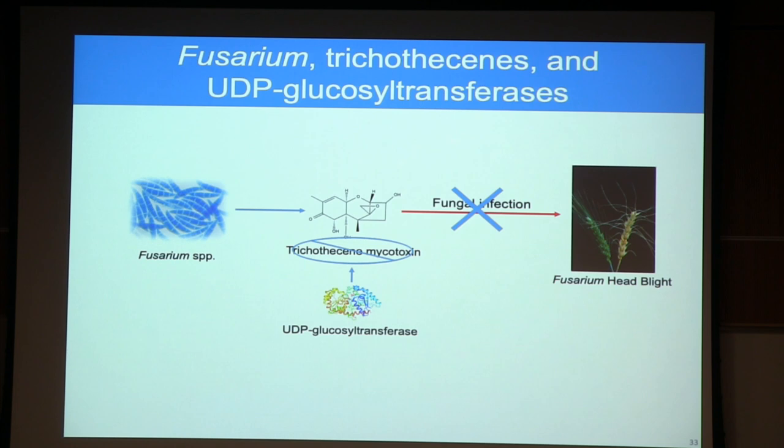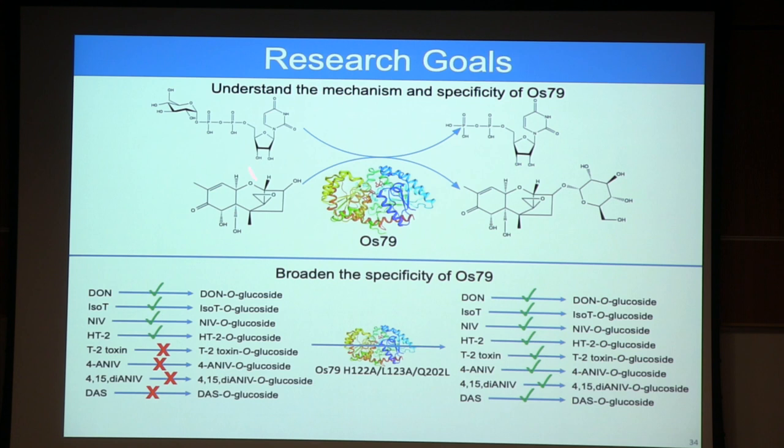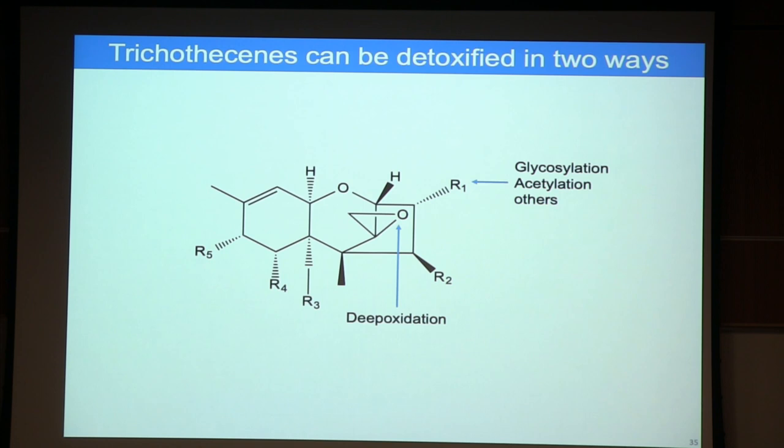To summarize project one: I generated extensive structural information about OS79, which can also help identify other UGTs able to glycosylate trichothecines. I then broadened the specificity of that enzyme to glycosylate all trichothecines, not just these four.